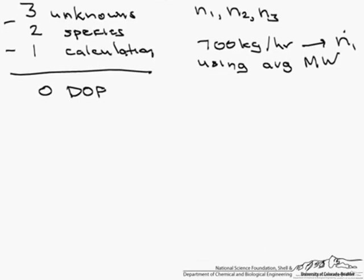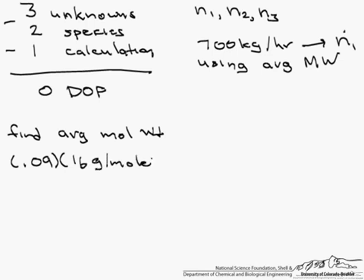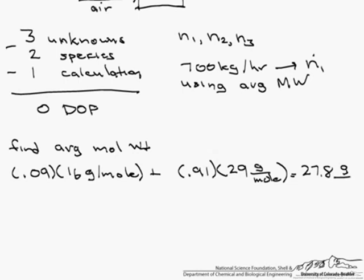So the first thing let's do is find the average molecular weight. We take our 0.09 mole percent of methane and multiply it by the molar mass of methane which is 16 grams per mole, and we add that 0.91 mole percent of air and the molar mass of air is 29 grams per mole. And so we come up with an average molecular weight of 27.8 grams per mole. And that makes sense—it's going to be closer to the molecular weight of air because it's 91% air.